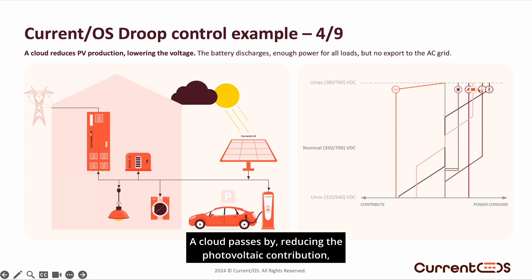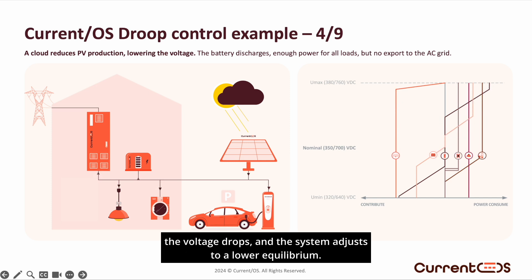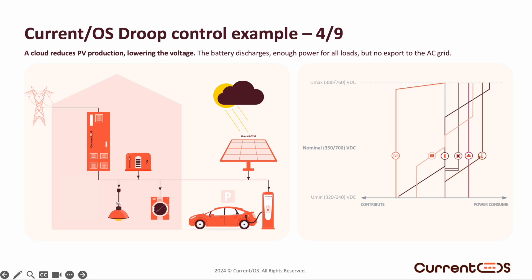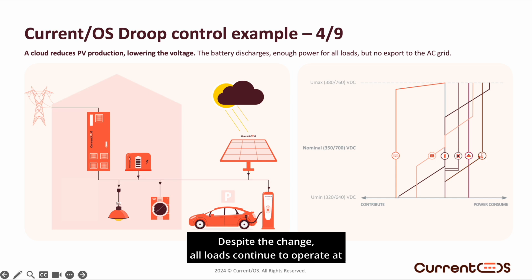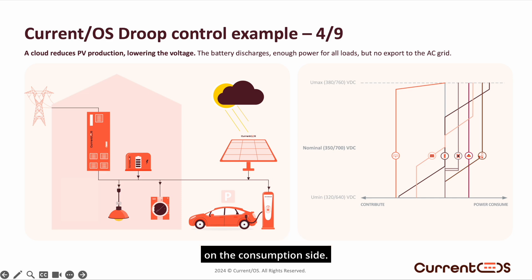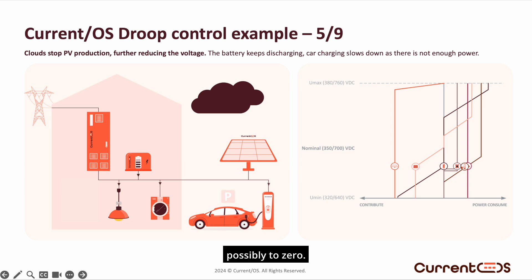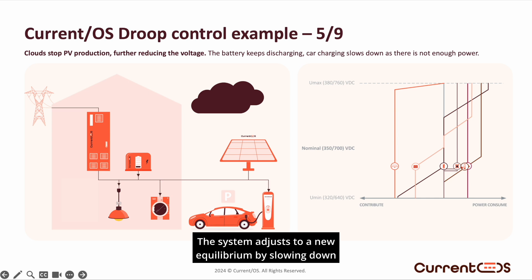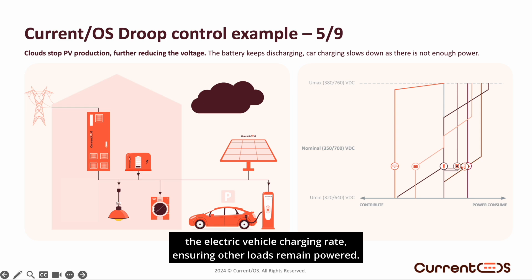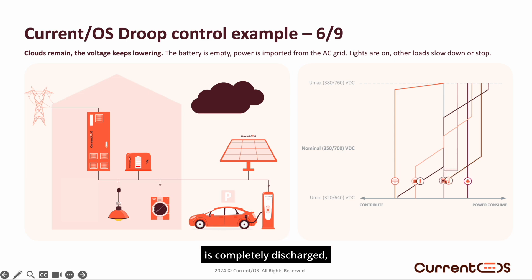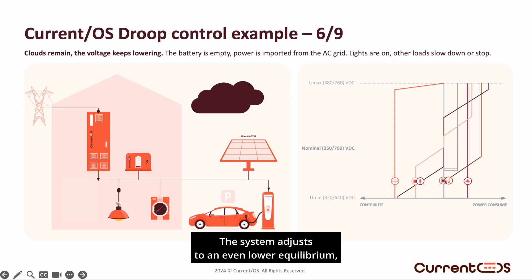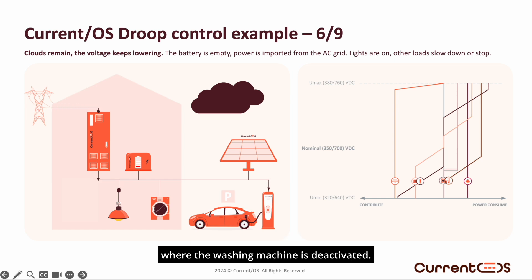A cloud passes by, reducing the photovoltaic contribution — the voltage drops, and the system adjusts to a lower equilibrium. At this new equilibrium, the missing power is drawn from the battery. Despite the change, all loads continue to operate at their nominal power, ensuring no disruption on the consumption side. More clouds arrive, further reducing the photovoltaic contribution, possibly to zero. The battery is pushed to its maximum output, but it's still not enough to power all the loads. The system adjusts to a new equilibrium by slowing down the electric vehicle charging rate, ensuring other loads remain powered. This situation can continue until the battery is completely discharged, at which point it stops contributing, and the system adjusts to an even lower equilibrium where the washing machine is deactivated.